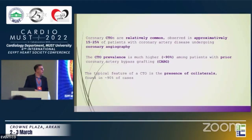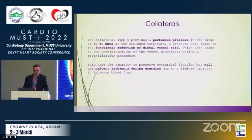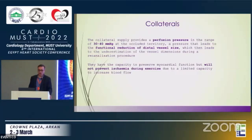A typical feature of CTO is the presence of collaterals in more than 90 percent of cases. Collaterals supply a perfusion pressure in a range of 30 to 40 mmHg at the occluded territory. This pressure leads to a functional reduction of distal vessel size, which leads to underestimation of vessel dimensions during recanalization. Collaterals have the capacity to preserve myocardial function but will not prevent ischemia during exercise due to their limited capacity to increase blood flow.